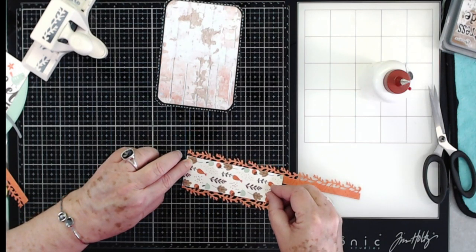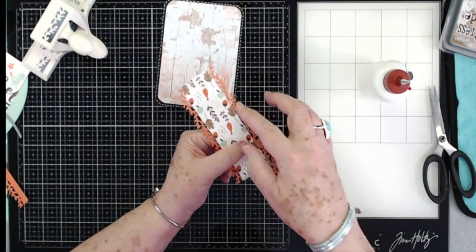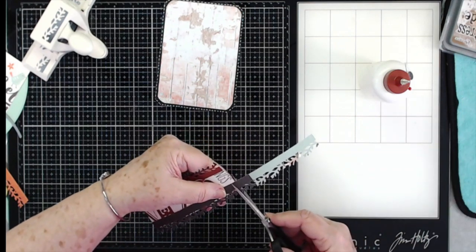Now I'm going to put this on this side. And again, I'm going to put it close to the edge there, so that all you see is that branch.